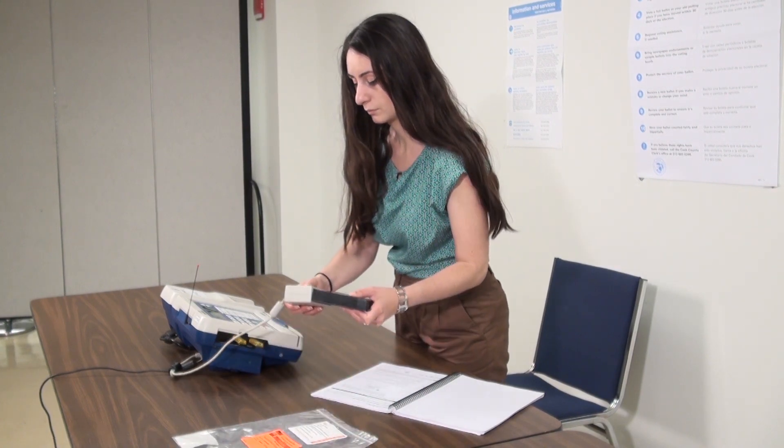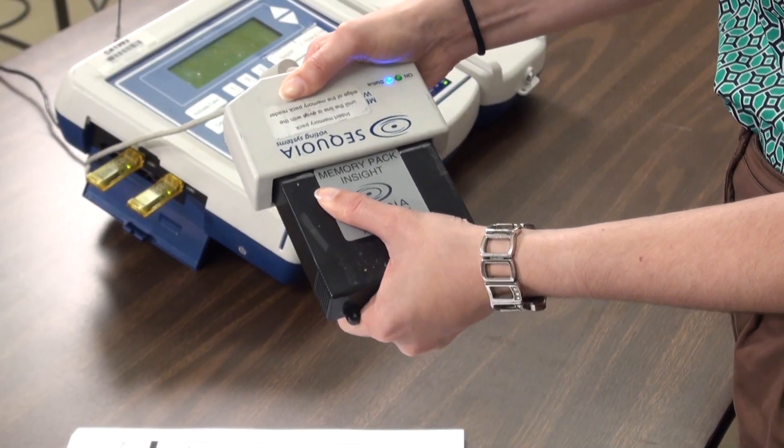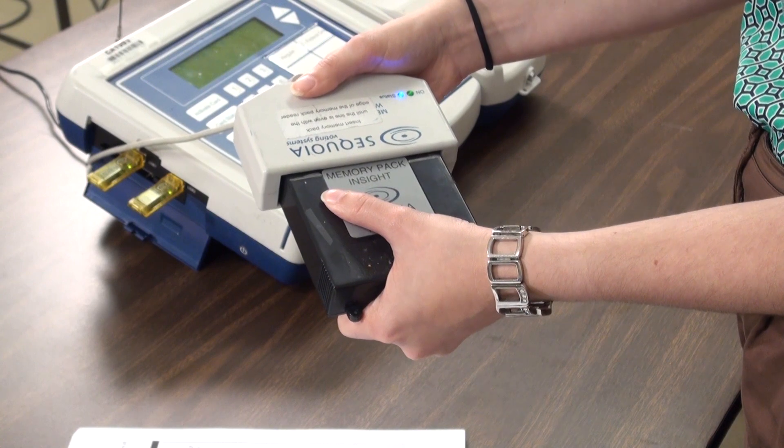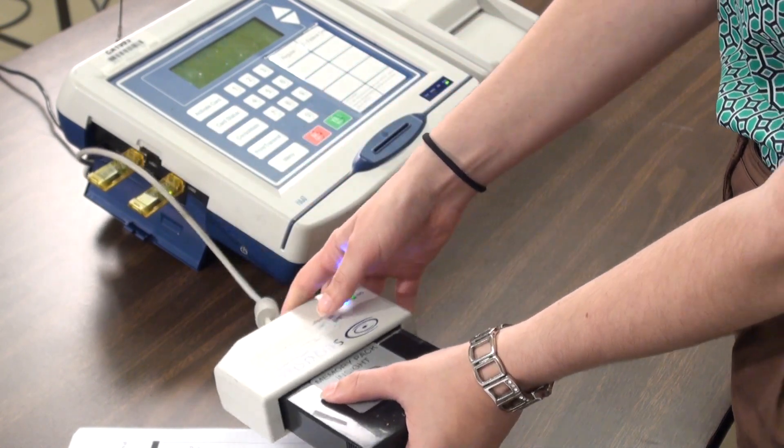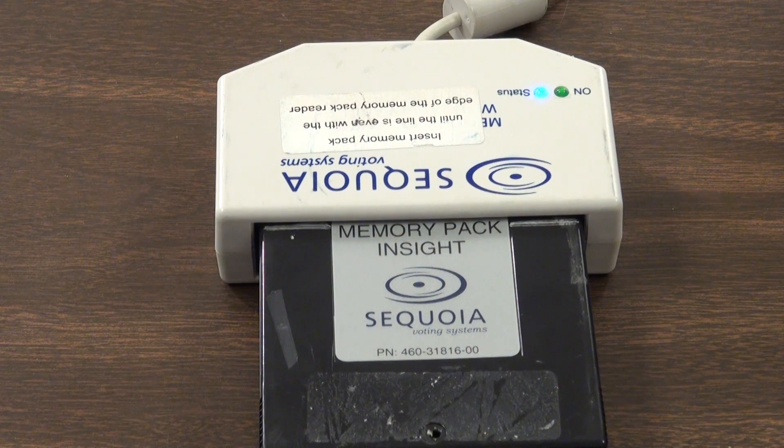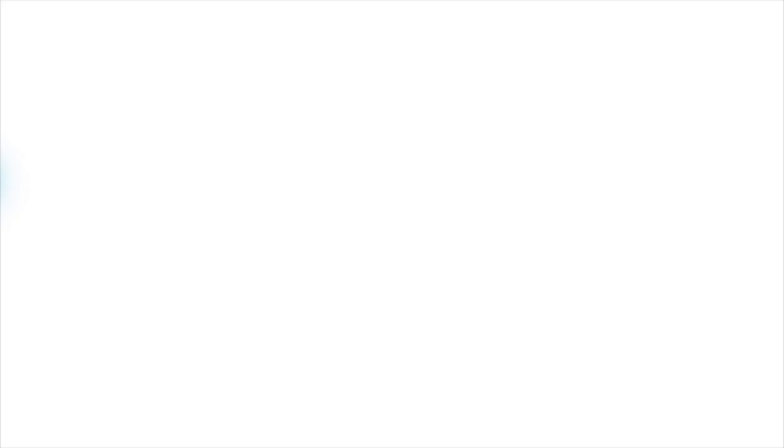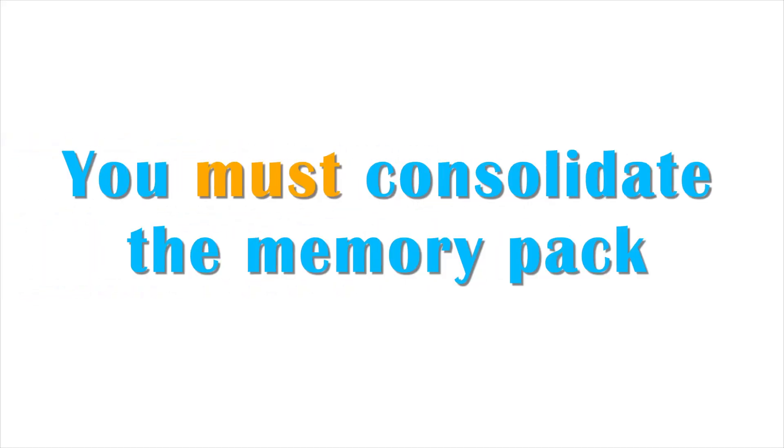Insert the memory pack from the scanner into the memory pack reader. The line on the memory pack should be even with the edge of the memory pack reader. The blue light on the reader will light up when the pack is properly inserted. Consolidate the memory pack from the scanner, even if the machine was not used during the day.